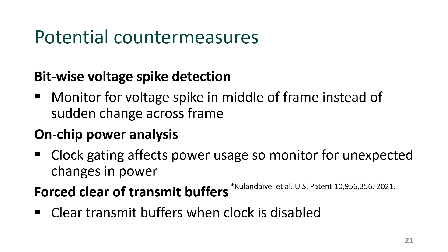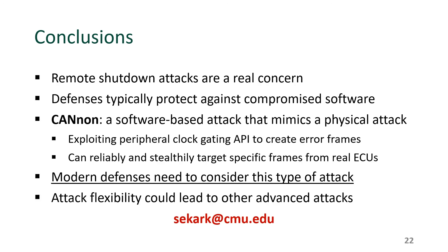Let's discuss the important takeaways. For countermeasures, first, we can build a bitwise voltage spike detector that monitors for voltage spikes during a frame transmission — CANNON's footprint won't be as obvious as other attacks, but detection is possible. Likewise, on-chip power analysis for a host-based IDS can monitor for unexpected changes in power, which occurs when the CANNON clock is disabled and enabled. In terms of prevention, one idea is to forcibly clear an ECU's transmit buffers when the clock is disabled — if the buffers are cleared, the attack cannot work. CANNON is a software-based attack that mimics a physical attack by exploiting the peripheral clock gating feature of modern microcontrollers. It is clear that modern defenses need to consider this attack, especially since CANNON's flexibility can lead to other advanced attacks. Thank you.